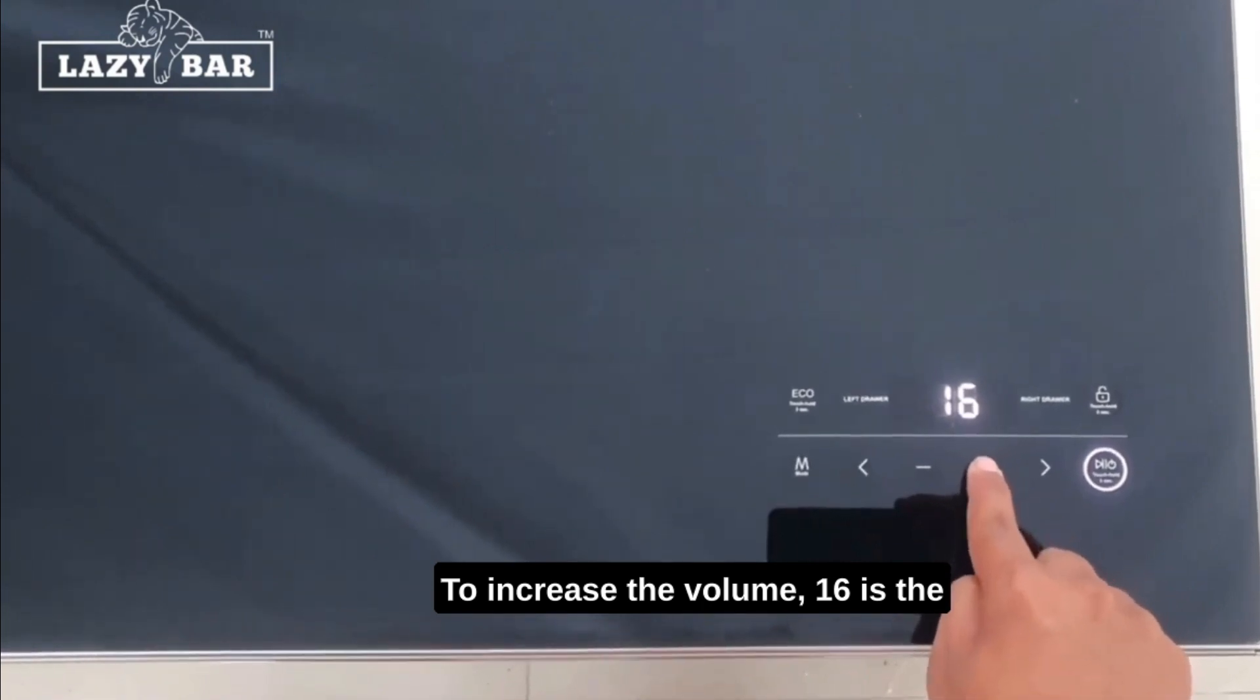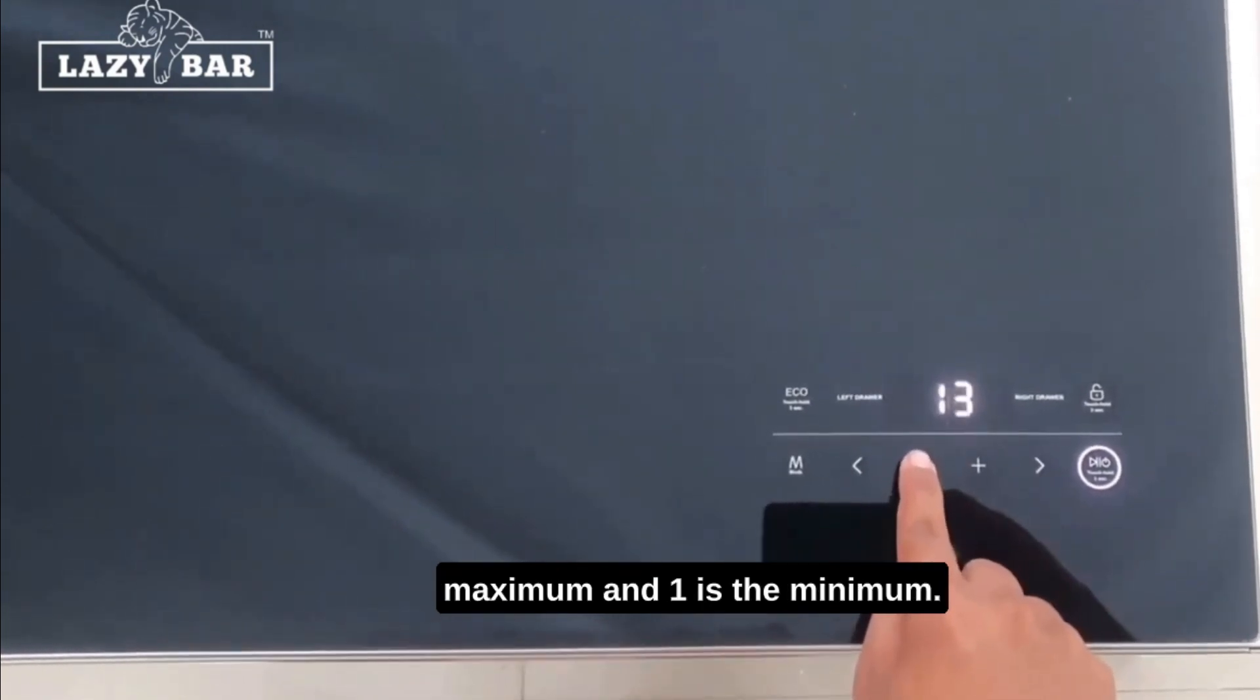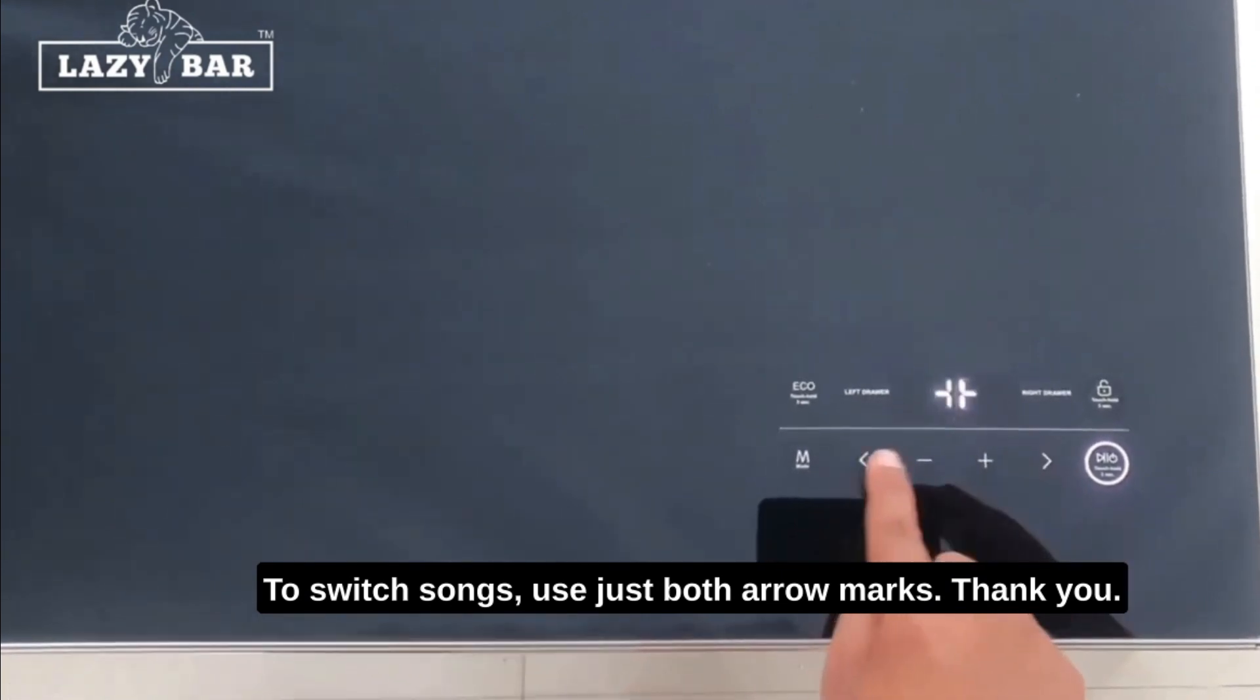To increase the volume, 16 is the maximum and 1 is the minimum. To switch zones, use both arrow marks.